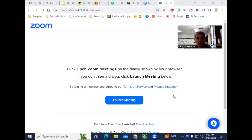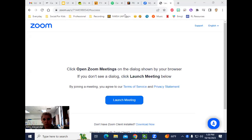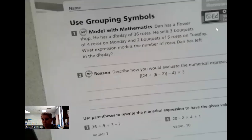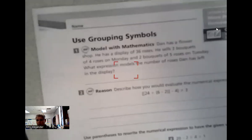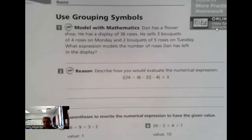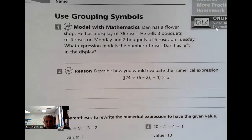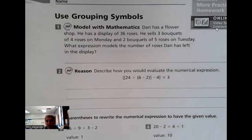Hello, everybody. I am hoping that the sound is working this time. I'm going to share my screen with you for practice on lesson four of module four. So we're starting off. It says Dan has a flower shop. He has a display of 36 roses. He sells three bouquets of four roses on Monday and two bouquets of five roses on Tuesday. What expression models the number of roses Dan has left in the display?